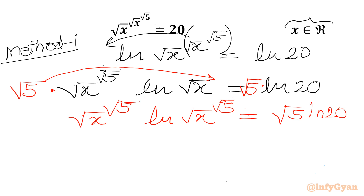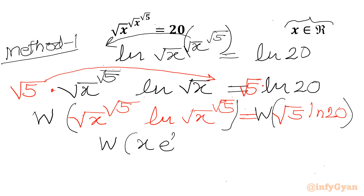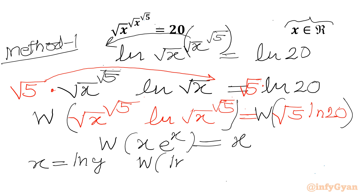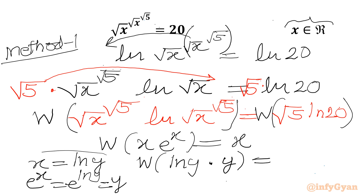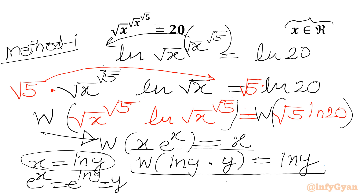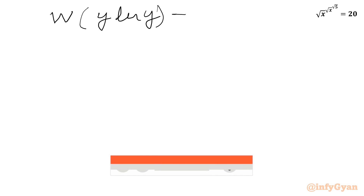Now we will apply the Lambert W function to both sides. We know the property of the Lambert W function: W(x · e^x) = x. If we substitute x = ln y, then e^x = e^(ln y) = y, so we get W(ln y · y) = ln y. We will prefer to use this property of Lambert W: W(y · ln y) = ln y.